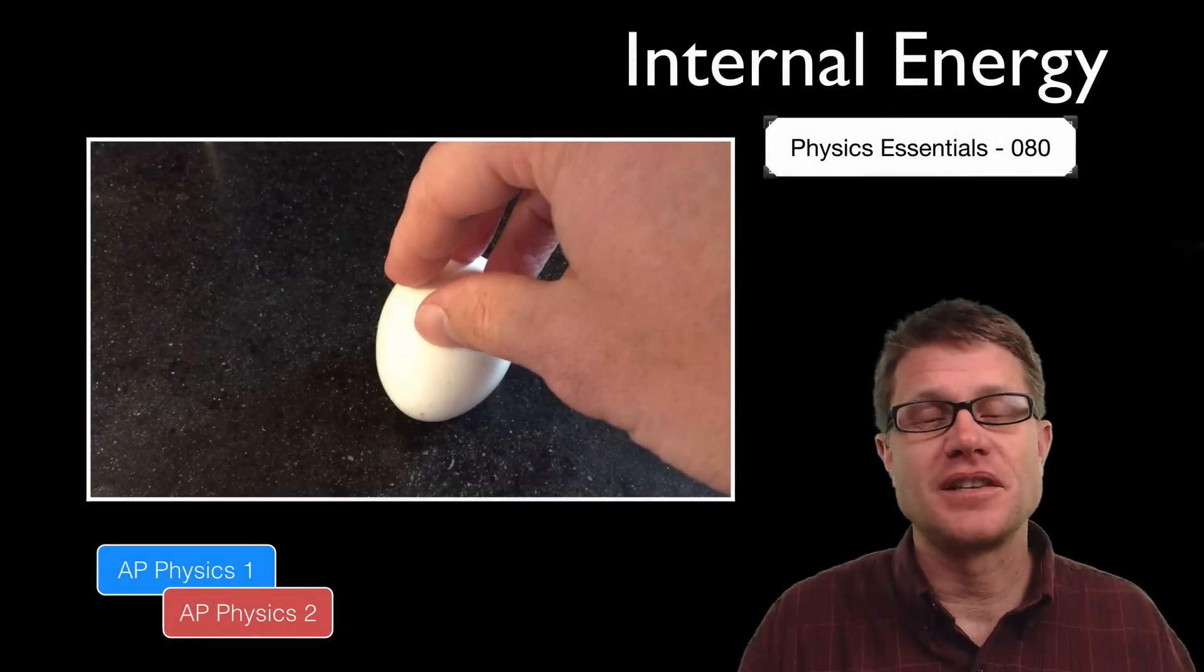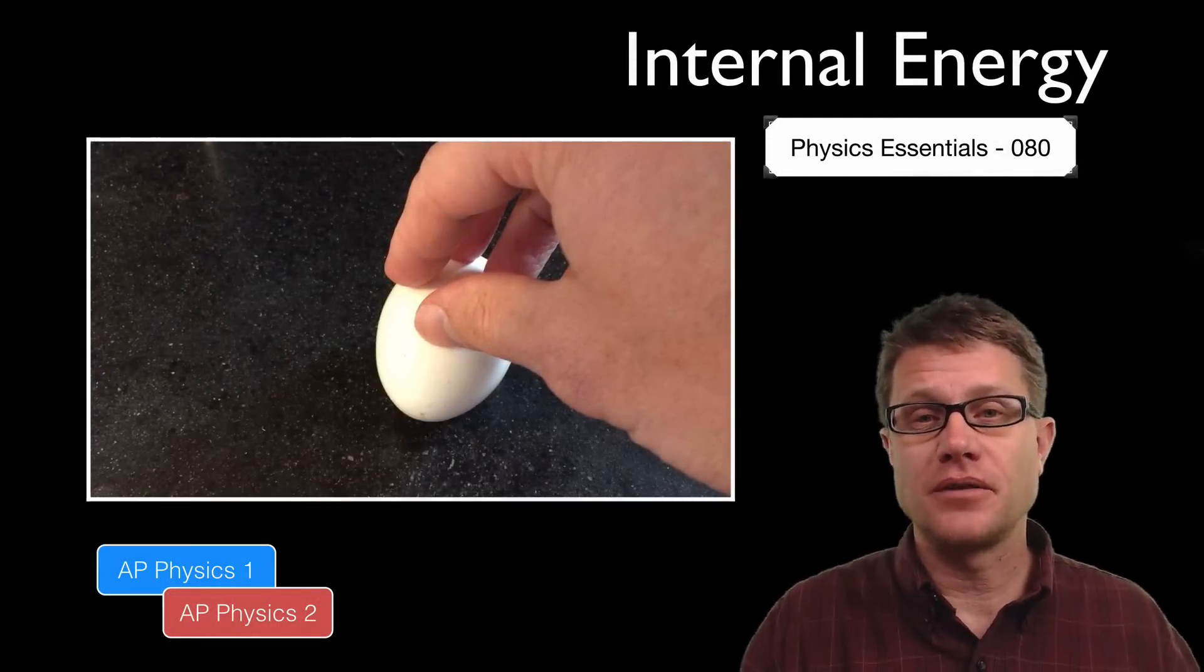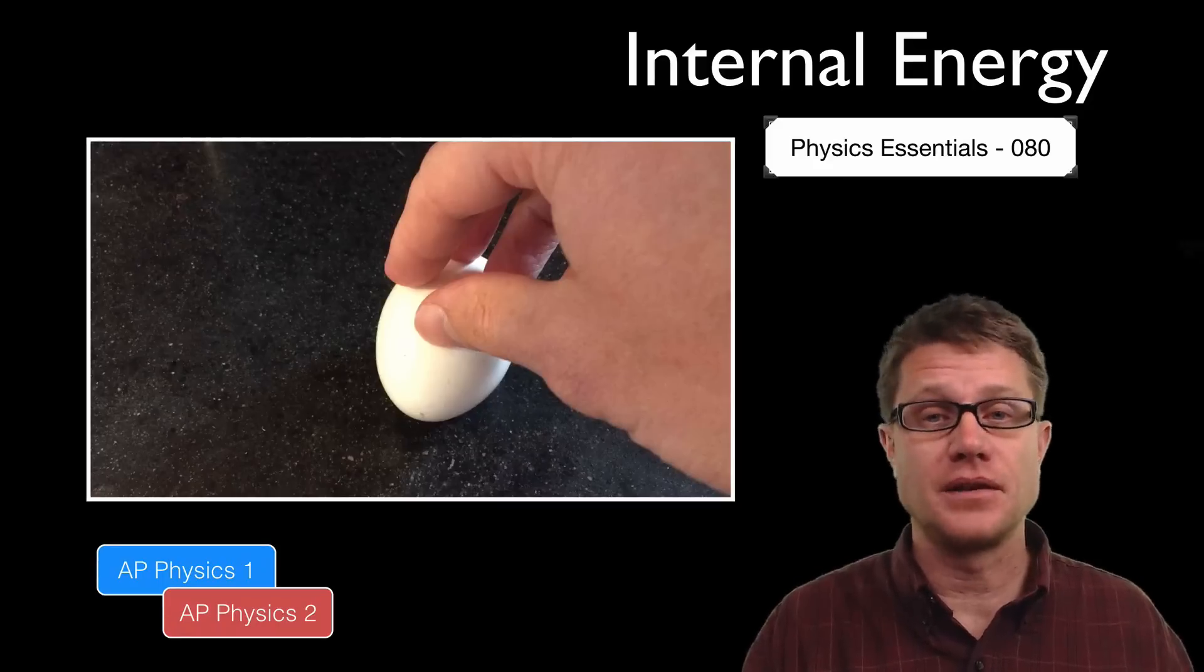Hi, it is Mr. Andersen and this is AP Physics essentials video 80. It is on internal energy, which is the energy found in a system due to the internal structure of that system.